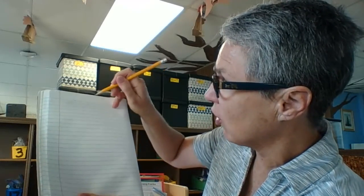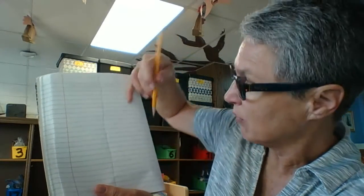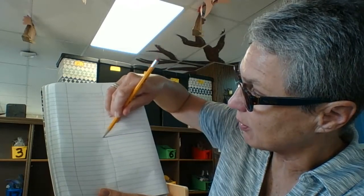Then I'm going to take my writing tool and I'm going to make a long vertical line down the middle. And I'm going to make a shorter horizontal line across the middle.